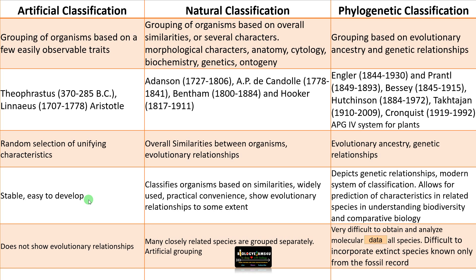For natural classification, many closely related species are grouped separately. For example, in plants, Liliaceae and Amaryllidaceae families are closely related but are classified separately in Bentham and Hooker's system. It is an artificial grouping to some extent, even though it shows evolutionary relationships to some extent. For phylogenetic classification, the major difficulty is obtaining and analyzing molecular data; DNA sequencing and sophisticated equipment are required.